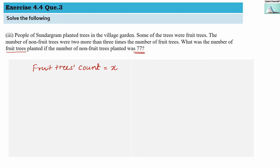Now we set up the equation. The number of non-fruit trees is 2 more than 3 times the number of fruit trees. 3 times the fruit tree count is 3 × x. 2 more than that means we add 2, giving 3x + 2. This is the count of non-fruit trees, and we know non-fruit trees are 77, so equals 77. This is our equation.